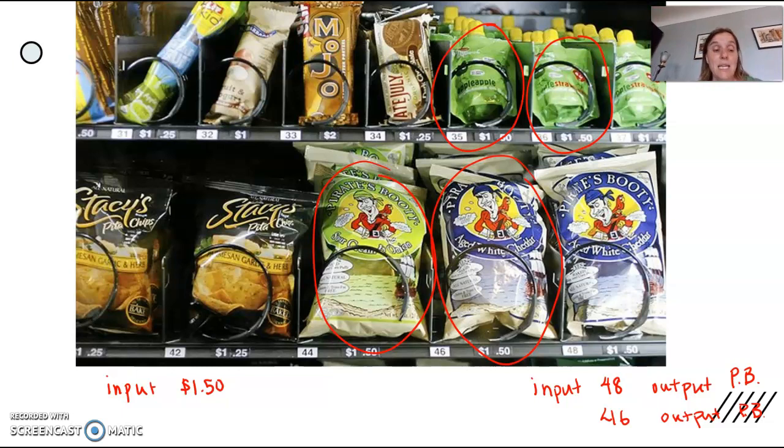So in that case, if you're thinking of the input as money, then this is not a function because the output is unpredictable. I don't know what the output is for every person who puts $1.50 into the machine. I know what the output is for every person who puts a 48 into the machine, but I don't know what the output is for every person who puts $1.50 into the machine.